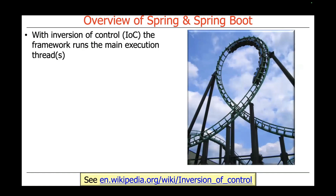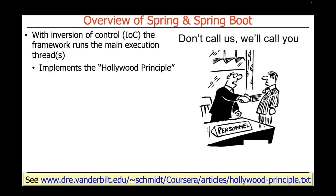The concept of inversion of control is also very important in Spring. What happens is that the Spring platform or framework owns and controls the main execution thread or threads — you don't have control of the threads per se. This implements the Hollywood principle: don't call us, we'll call you. You register certain objects and microservices with the Spring framework, and it owns the event loop, calling back on methods in your code when things occur that require your code's attention.